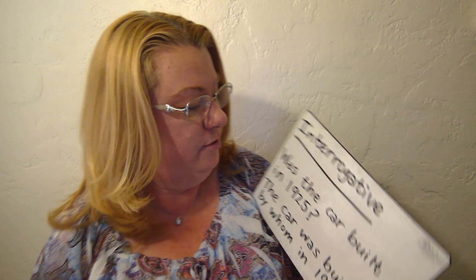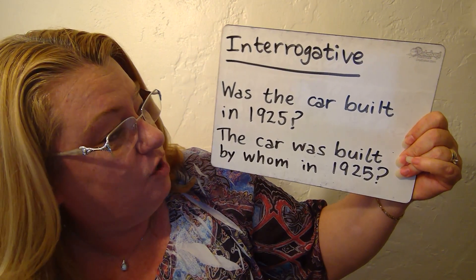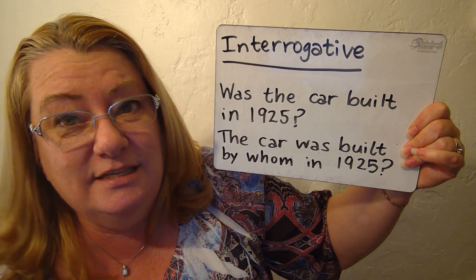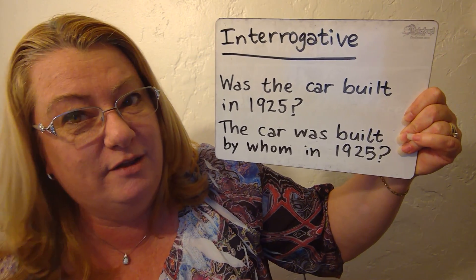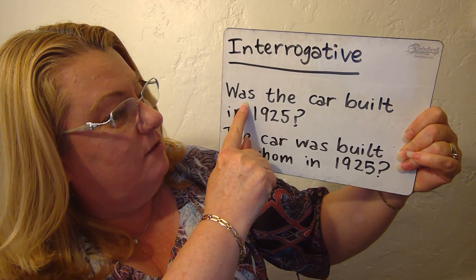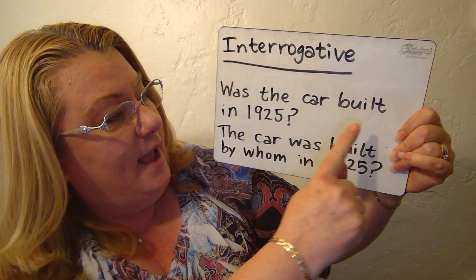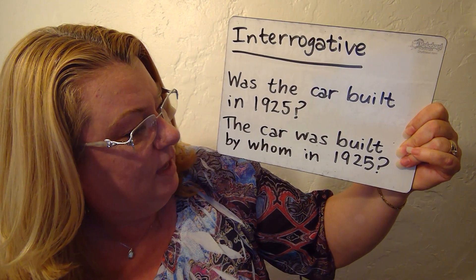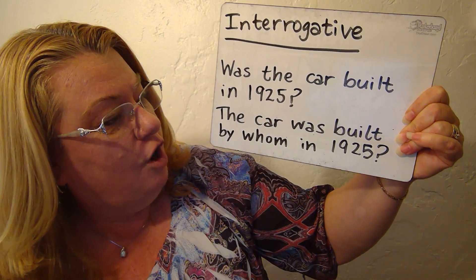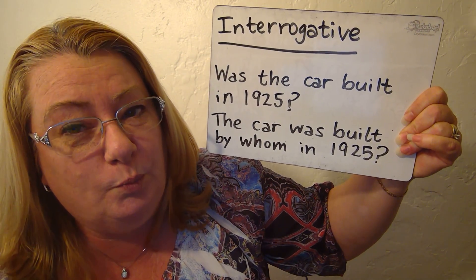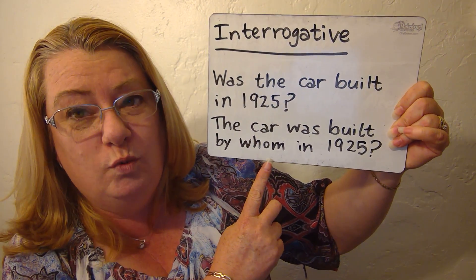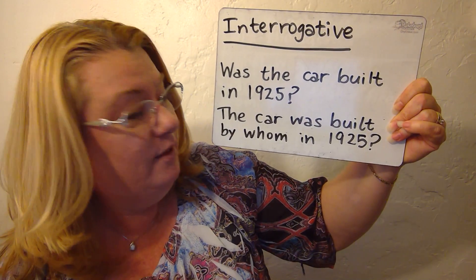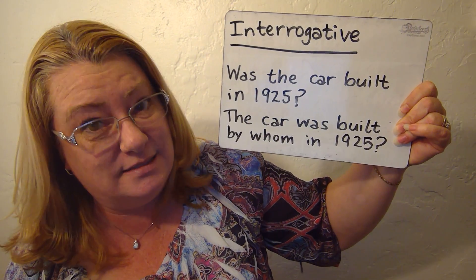Now let's look a little in depth at the interrogative. 'Was the car built in 1925?' You can see here is the 'to be' form and then the past participle. Here's another question: 'The car was built by whom in 1925?' If you wanted to ask who the agent is — who is the one that did it — you can ask that question.